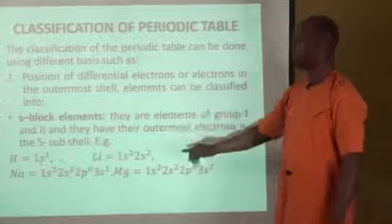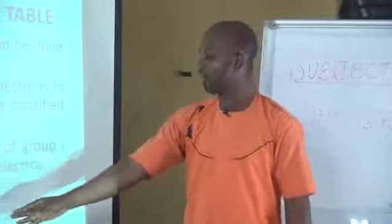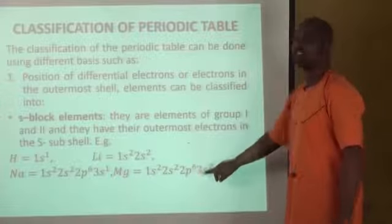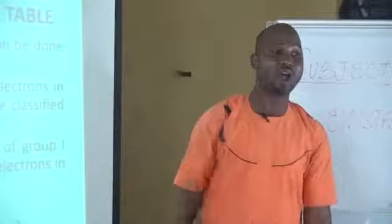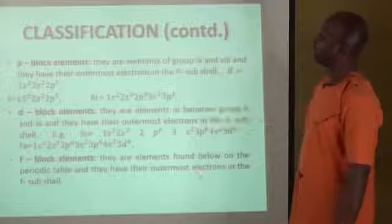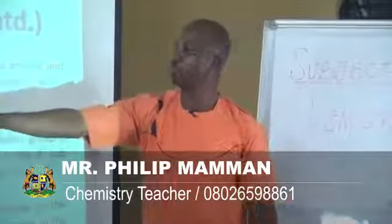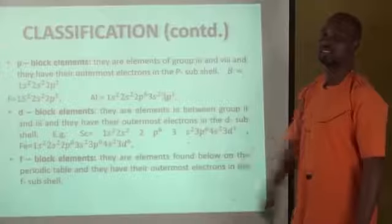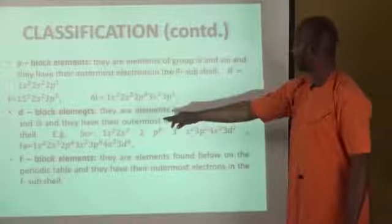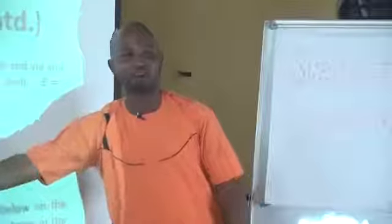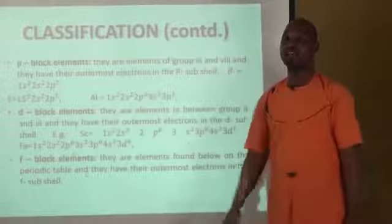Magnesium has the outermost shell as 3s, so because s is the outermost subshell, it is an S-block element. S-block elements are elements of group 1 and group 2. The P-block elements have their differential electron in the P-subshell — you can see boron 2p1, fluorine 2p5, aluminium 3p1, indicating they are P-block elements. The D-block elements have their differential electron in the D-subshell, as seen in scandium 3d1 and iron 3d6. The F-block elements also have their outermost electron in the F-subshell.